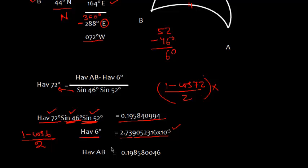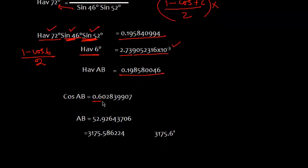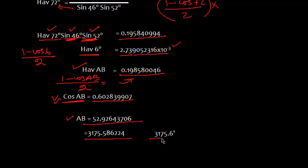This product is this. What we have to do is we add this and the net result is this. So cos AB is 0.602839907. Actually, this is the value of cos AB. Then 1 minus cos AB by 2 is equal to this. So we work out cos AB and simply the AB will be this one. Or we multiply with 60, so I get 3175.6 nautical miles.